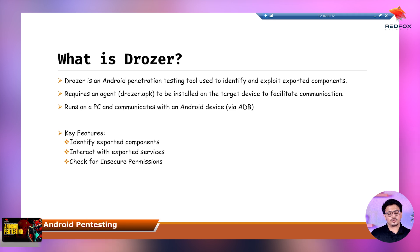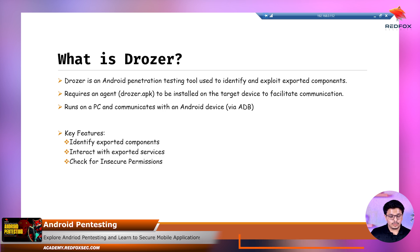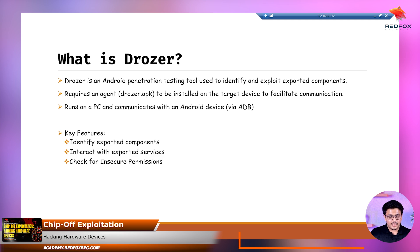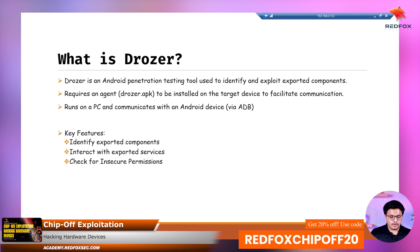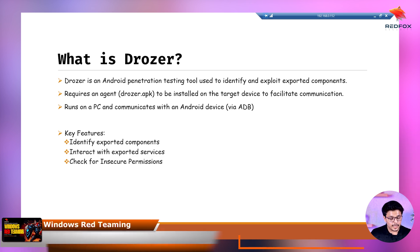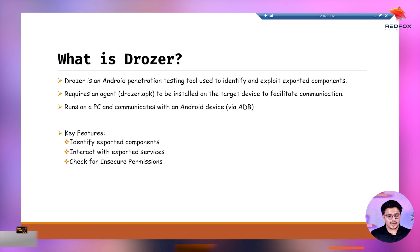First, it identifies exported components. What do we mean by exported components? There are some components in Android like activities and broadcast receivers — these are components of Android — and Drozer helps us to identify these exported components. Not only identify, but it also helps us to interact with these exported services. With this interaction, we can check if those have appropriate permissions or not. This is what Drozer gives us: the ability to properly communicate with the Android application and check the attack surfaces as well.